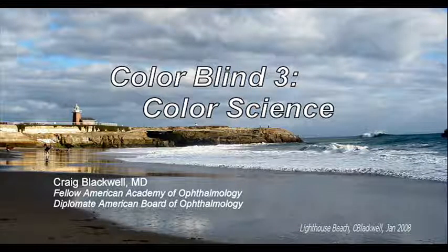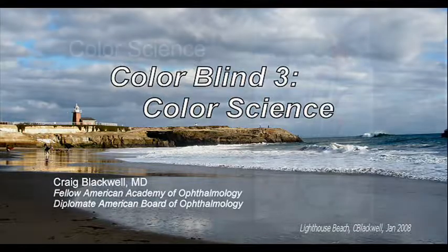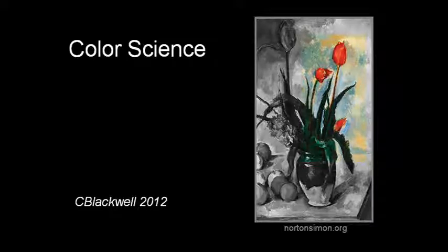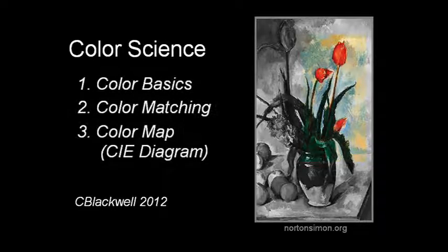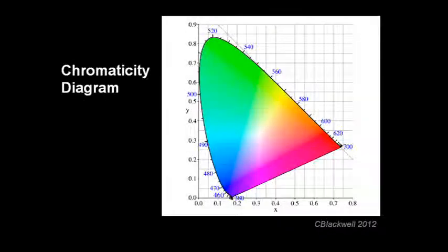In this video, we explore what color science tells us about color blindness. Color science gives us the tools for a more technical understanding of color and color vision. We reviewed the basics of color science in the series on color vision, videos 1 through 3. The culmination was the creation of what I call the color map, which is another way of describing the chromaticity diagram.